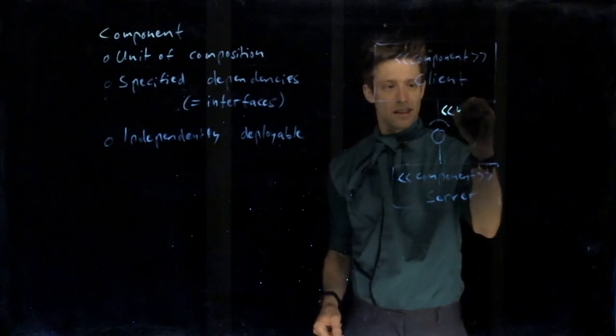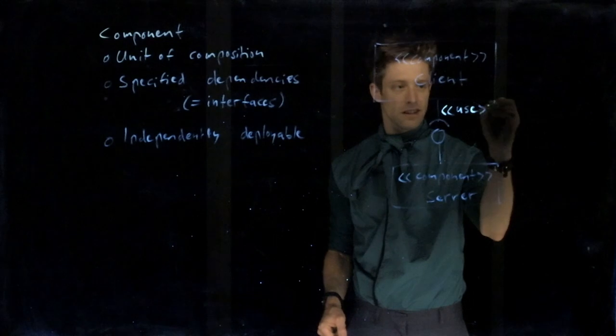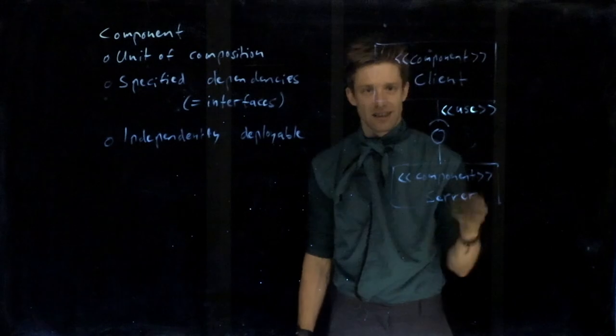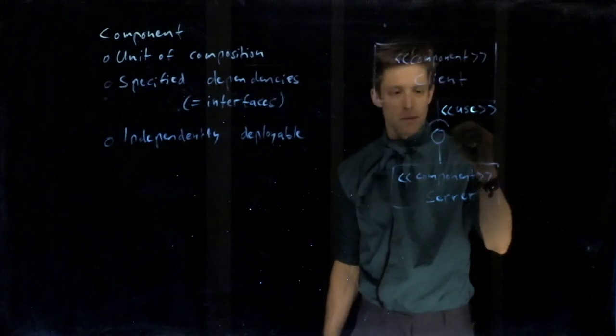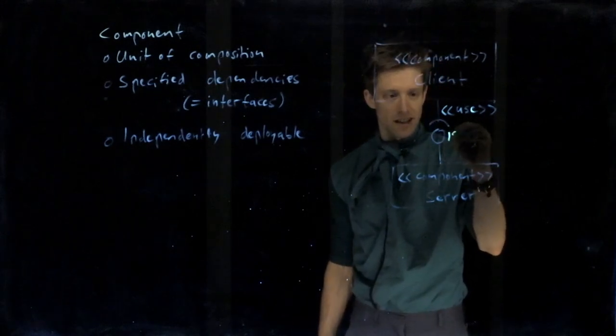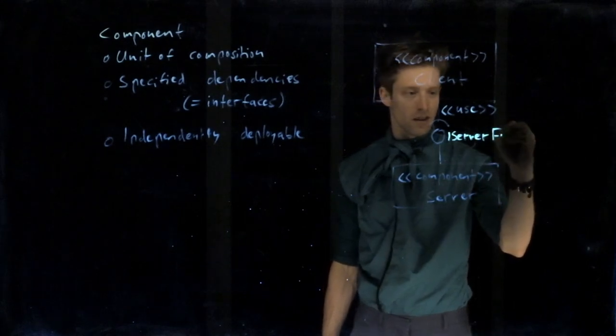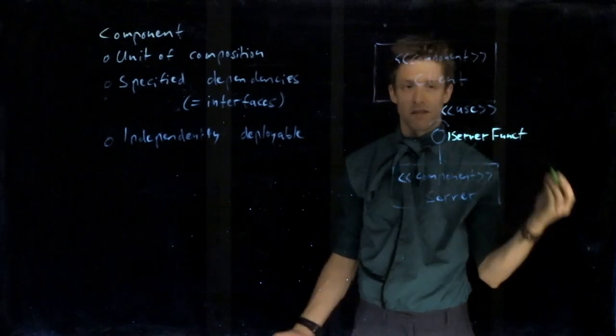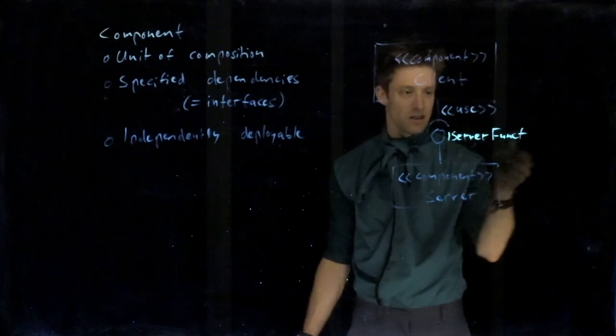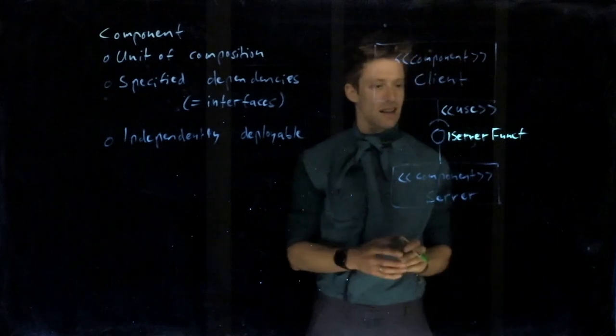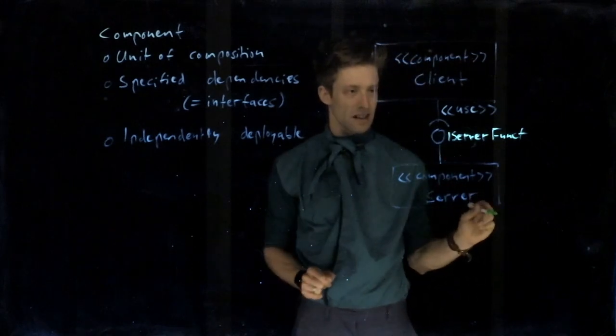The client needs some. And then, you write here that we are using this. So again, two angled brackets and use. Whereas this is the provides statement. And then, you can add a name here. You can, for example, say this is i server funct. That's just the name of our interface. So interface server functions or something. That's just the name we assign that the interface is called.